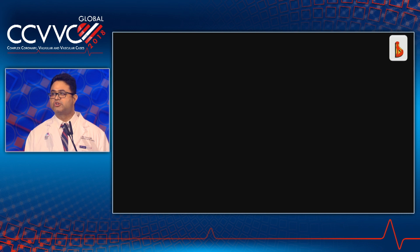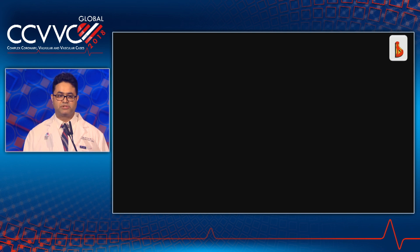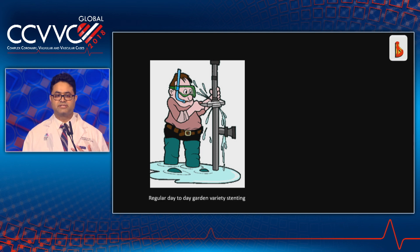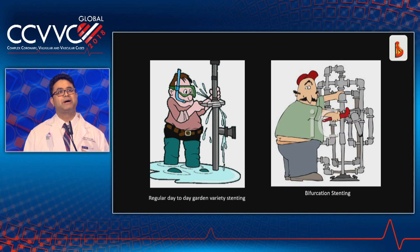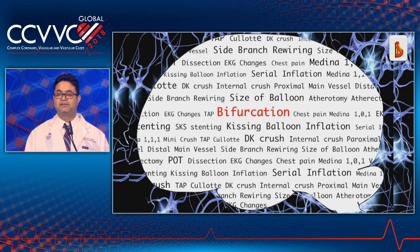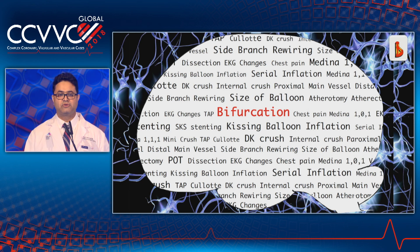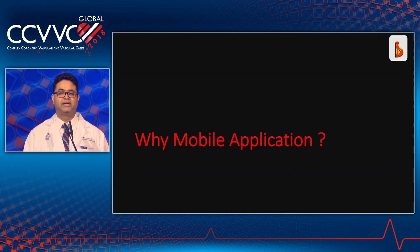Interventional cardiologists are also called the plumbers of the heart arteries. If a cartoon represents regular day-to-day garden-variety stenting, that's bifurcation — too many pipes bifurcating, trying to control them together. It can be really complex. If you do a craniotomy of the person trying to learn bifurcation intervention, the brain looks like chaos. We wanted to control this chaos, put it in order, and explain bifurcation step-by-step. That's why Bifurcaid came.